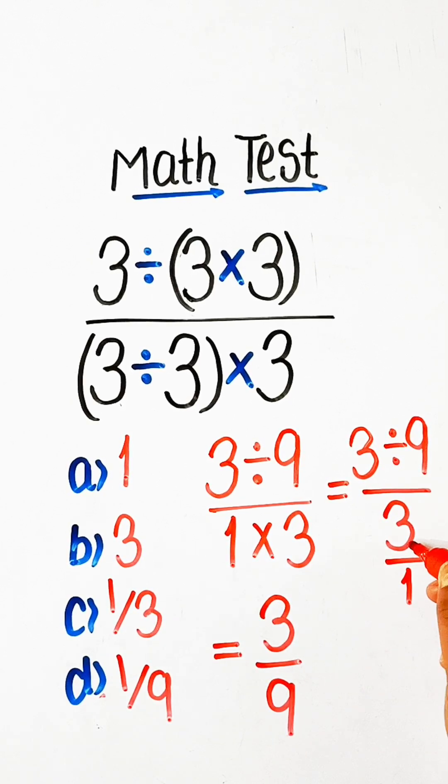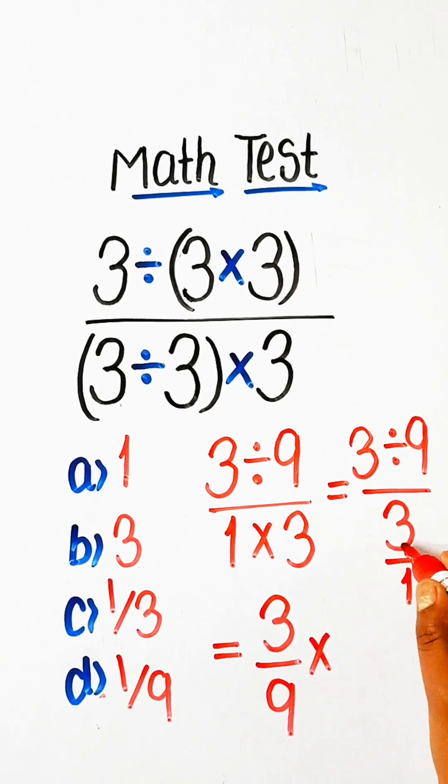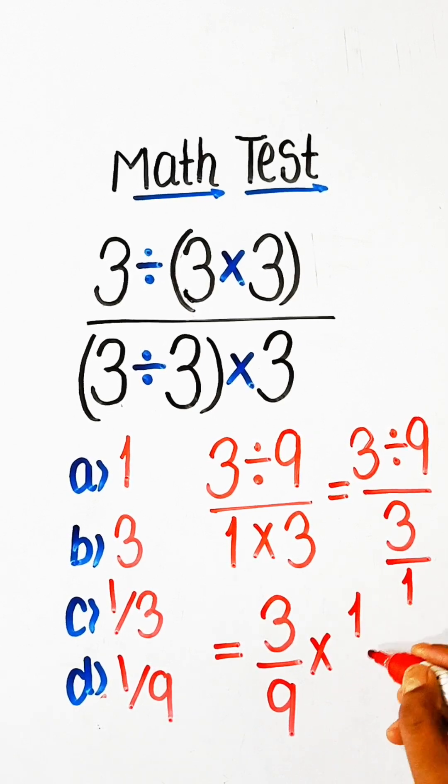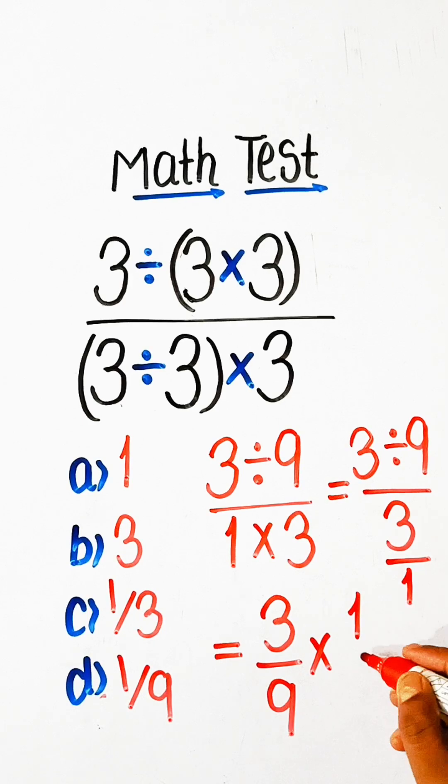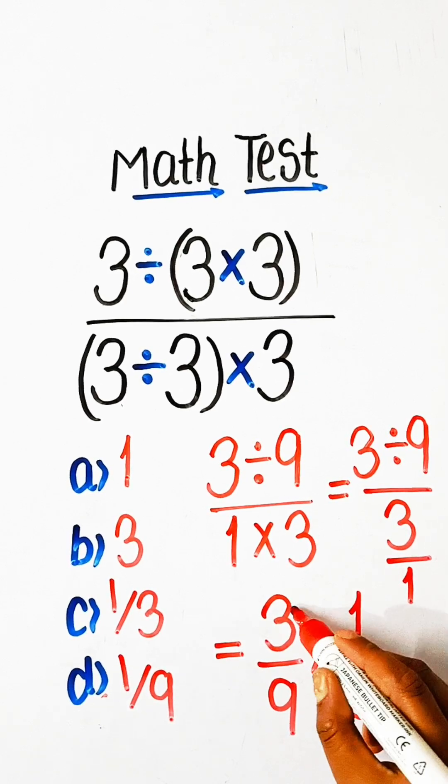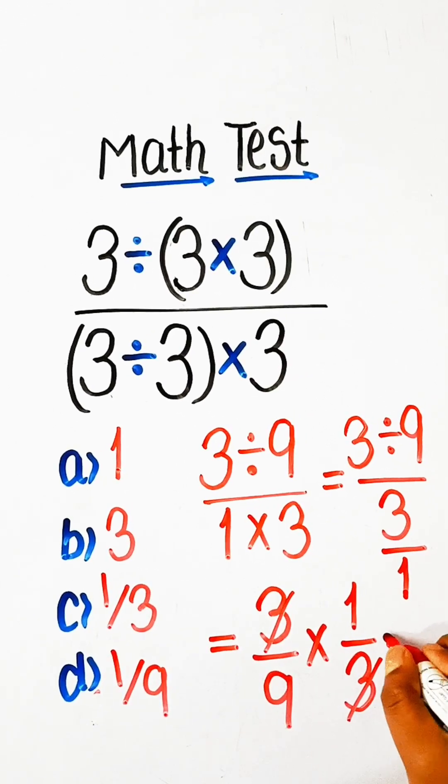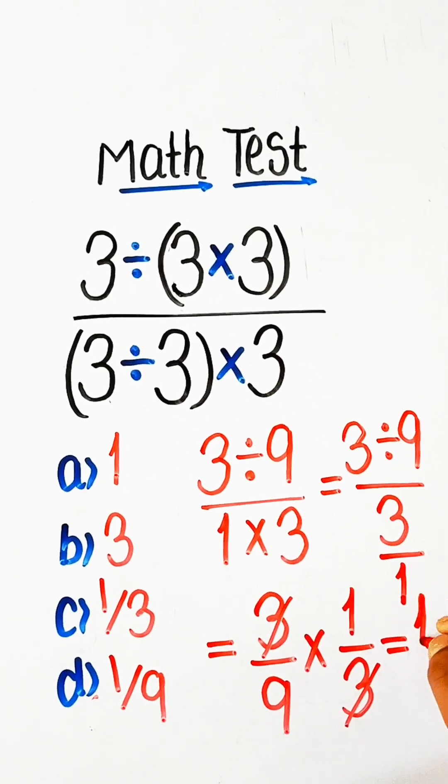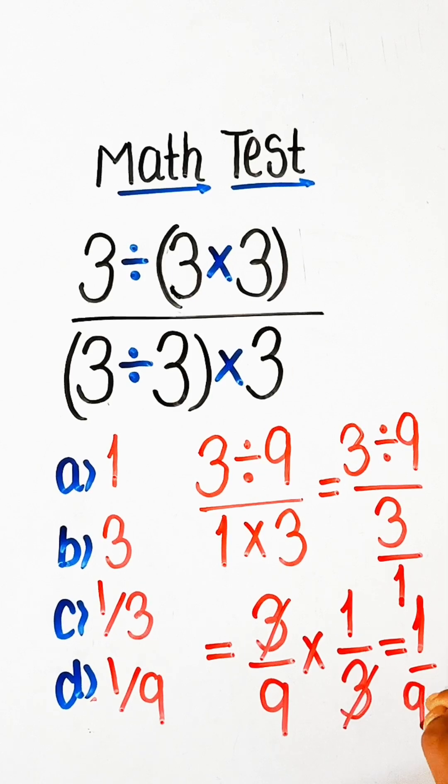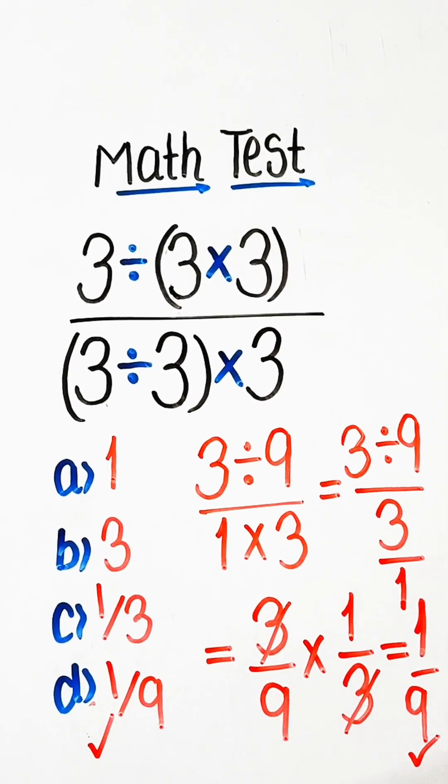We can write 3 upon 1 here, so we can write here 3, 1. It goes upside down, so we can write 1 upon 3. So option D will be our correct answer.